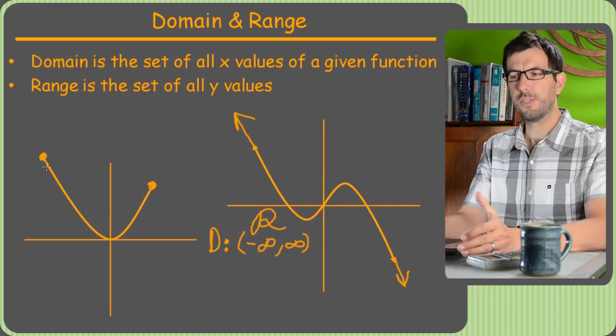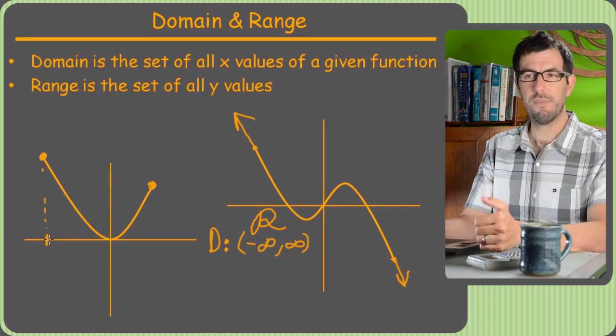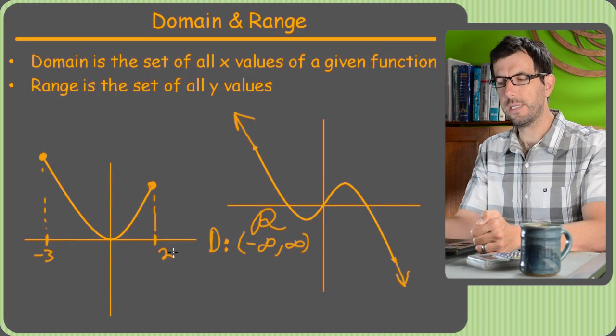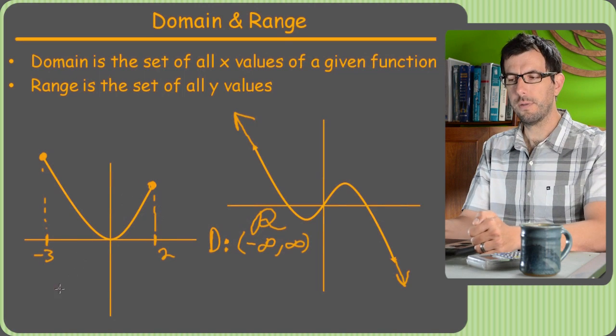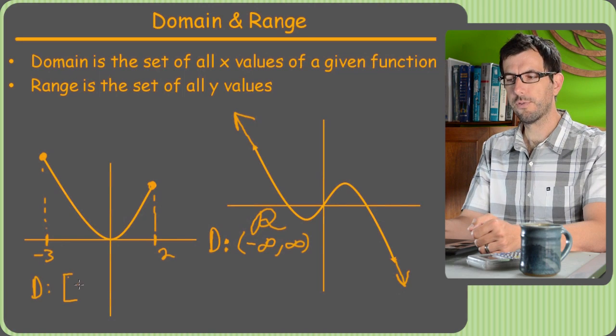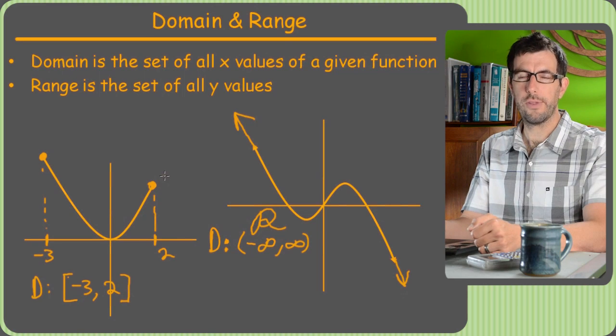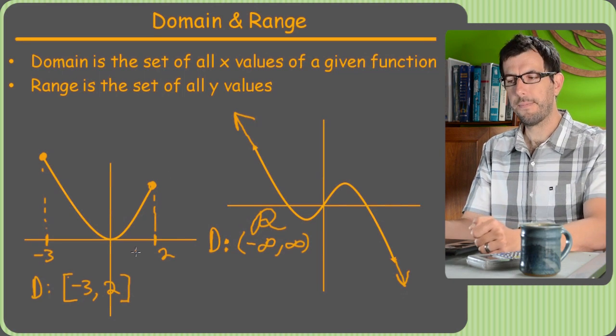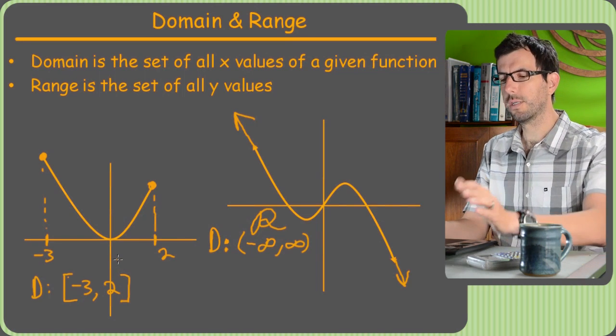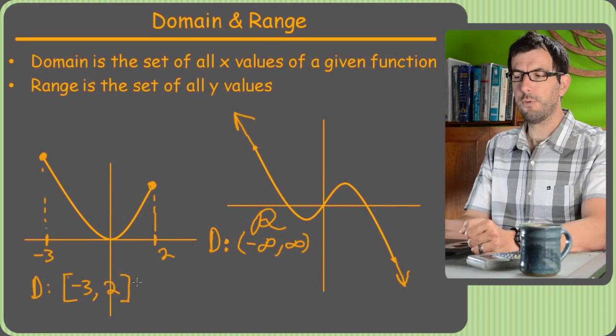That's the domain of this function as well, because it uses all the x's. Whereas if you look at the one on the left, its domain actually ends. It doesn't go to the left of this x value, whatever that is, maybe negative 3. And it never goes to the right of this one, let's say 2. So the domain on this one would be, since it ends in a closed dot, we're going to use square brackets. It goes from negative 3 to 2. If there had been an open dot on one end, we'd have to use a curved parenthesis on that end.